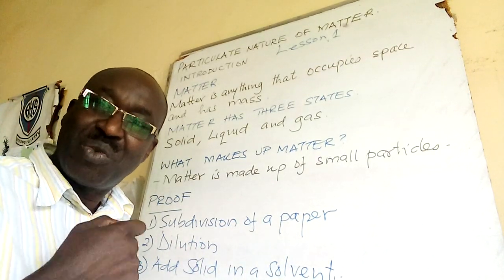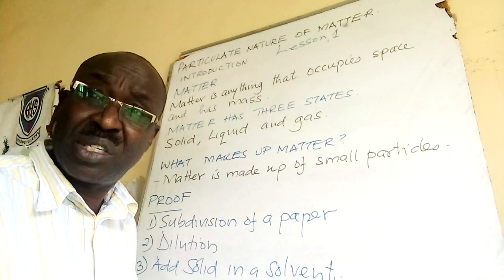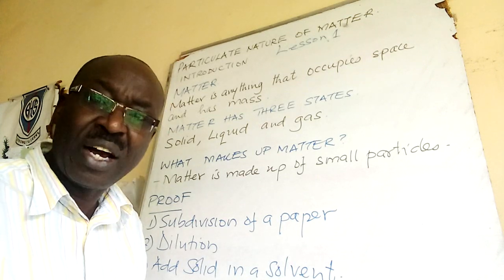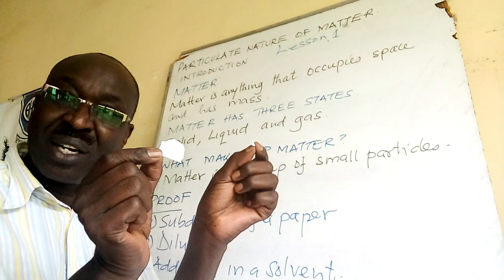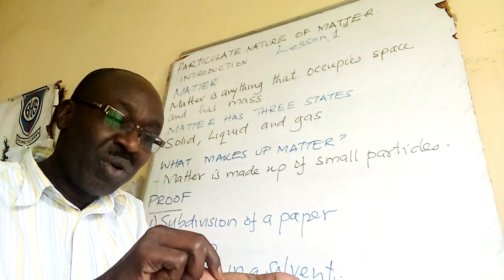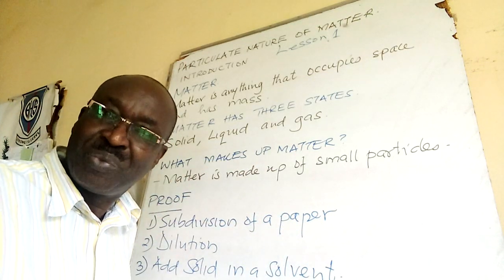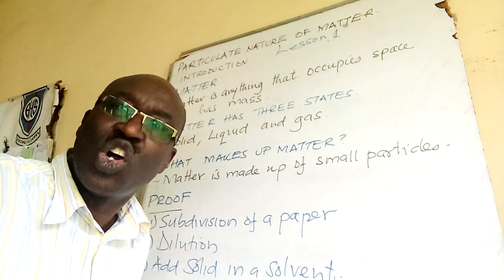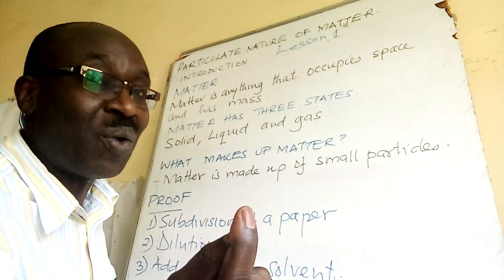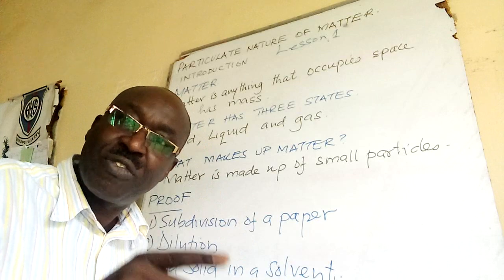You are trying to make it smaller and smaller until it becomes difficult with your bare hands to subdivide. The subdivision can go on and on until you use a machine, and on and on you will still remain with a particle. So subdivision of paper is a proof that matter is made up of particles.